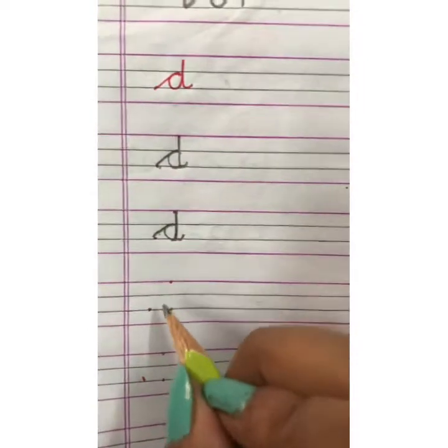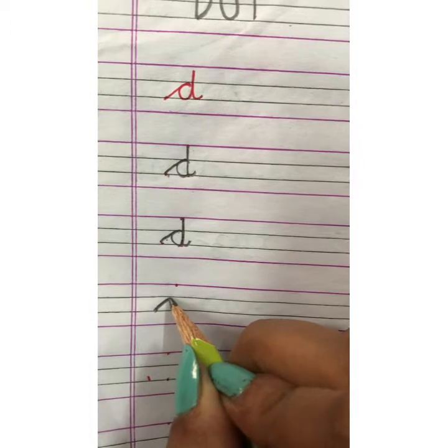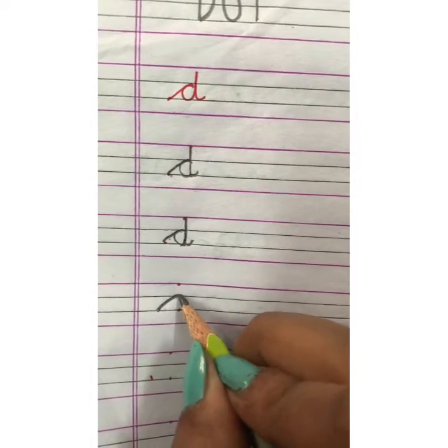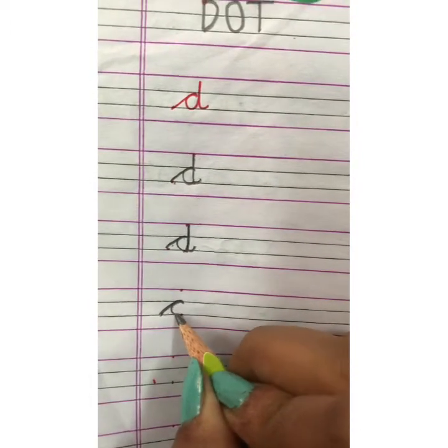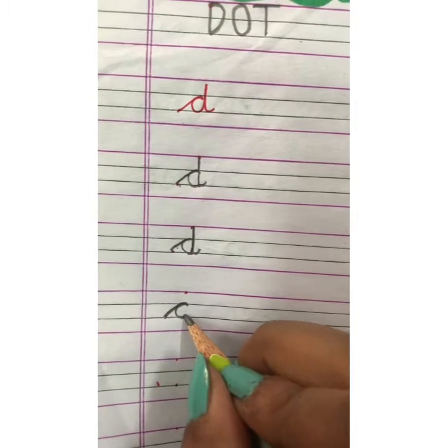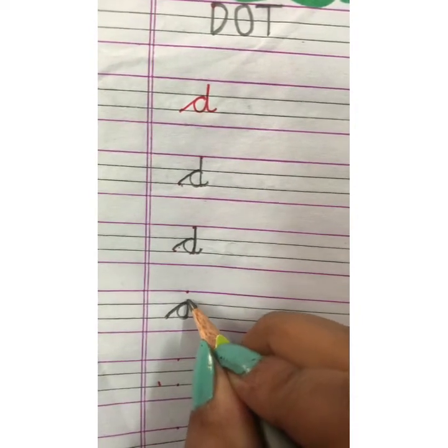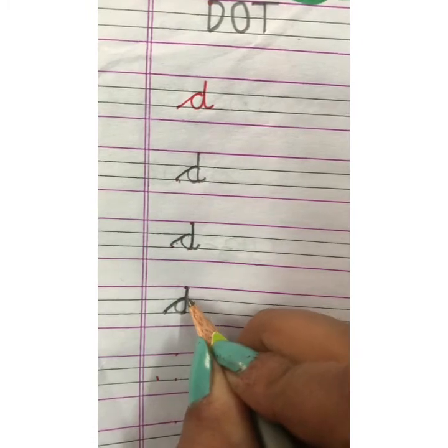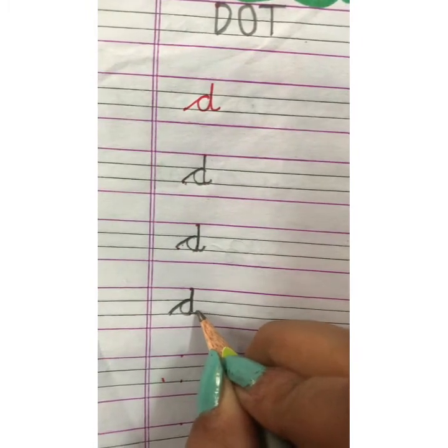Again, you will make. Go up. Like this. Move forward. Come back. Close the mouth of this circle. Go up. Come back again. And make a tail.